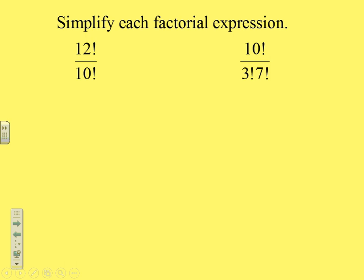Here we have two examples where we're asked to evaluate the factorial. In the example on the left we have 12 factorial divided by 10 factorial. Right away, let me illustrate something you should never do: because this is a fraction of 12 factorial over 10 factorial, some students will be very tempted to simplify it as 6 factorial over 5 factorial — never do that.